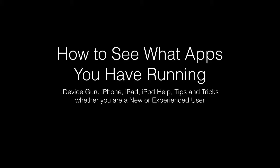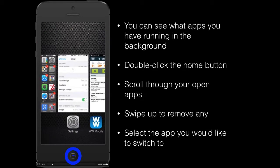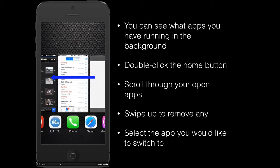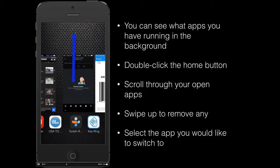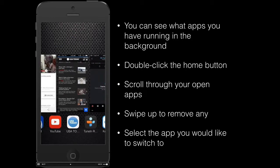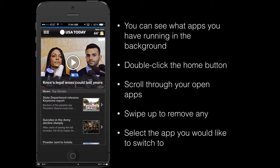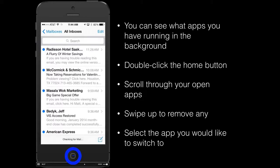Tip number ten: here's how to see what apps you have running on your iPhone or iPad. Multiple apps run in the background — basically anything you've opened since you started your phone. Simply double-click the home button and you'll see a display of all the different apps. Scroll through these and close any of them by flicking them off the screen. To switch to one of those apps, just select it and it will open. Double-click the home button again to scroll between apps.